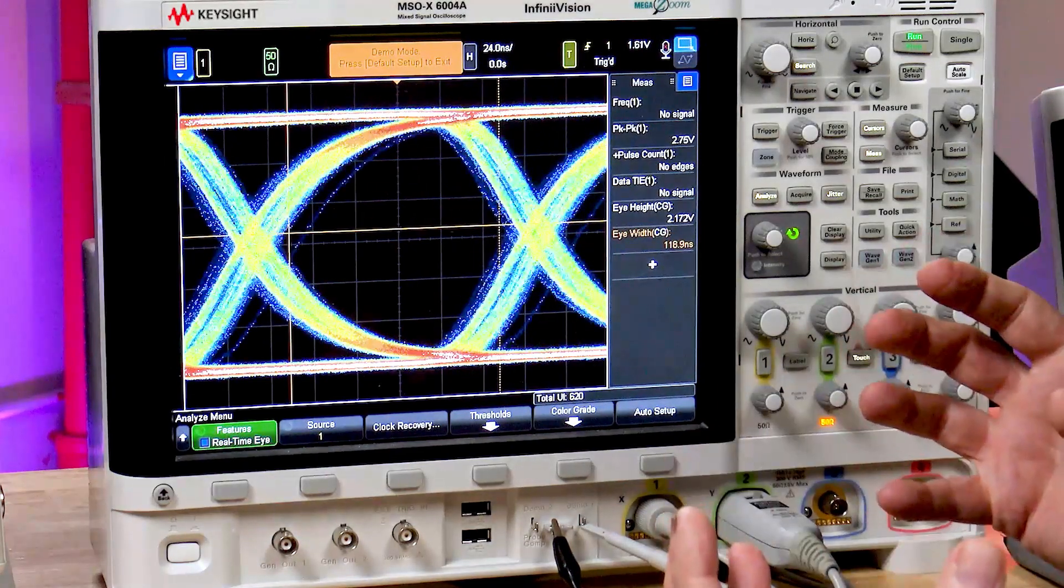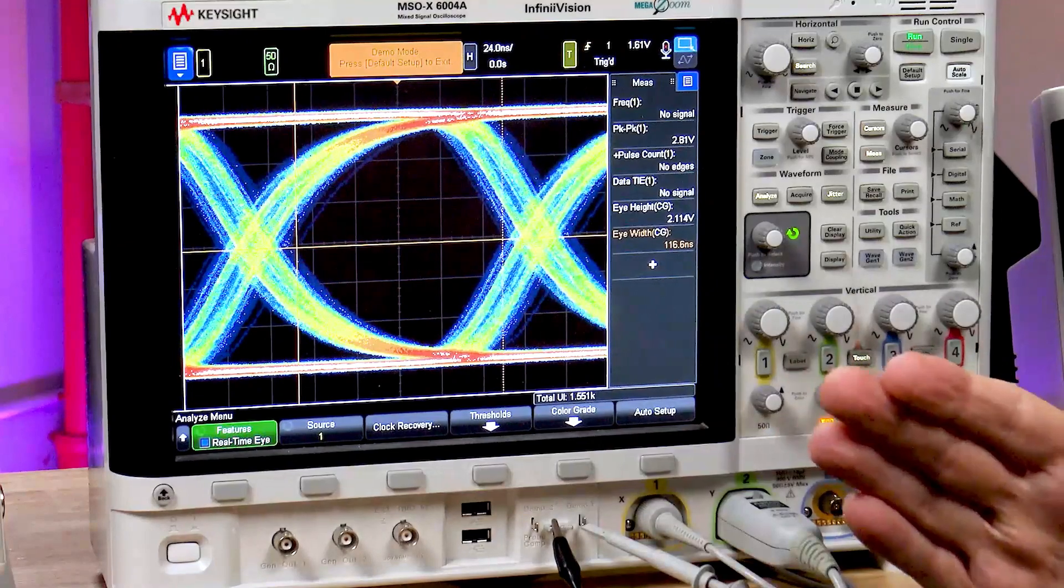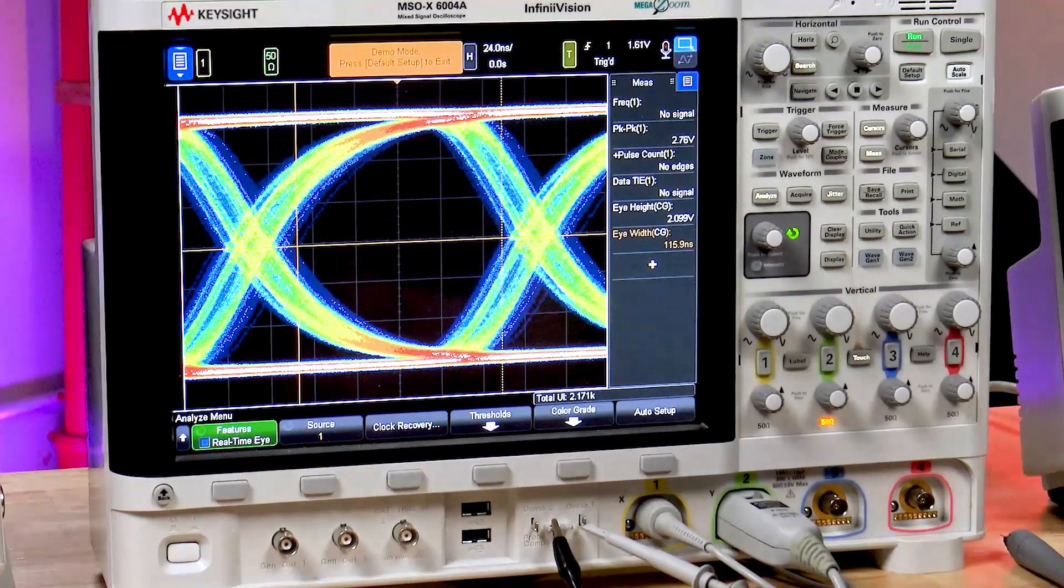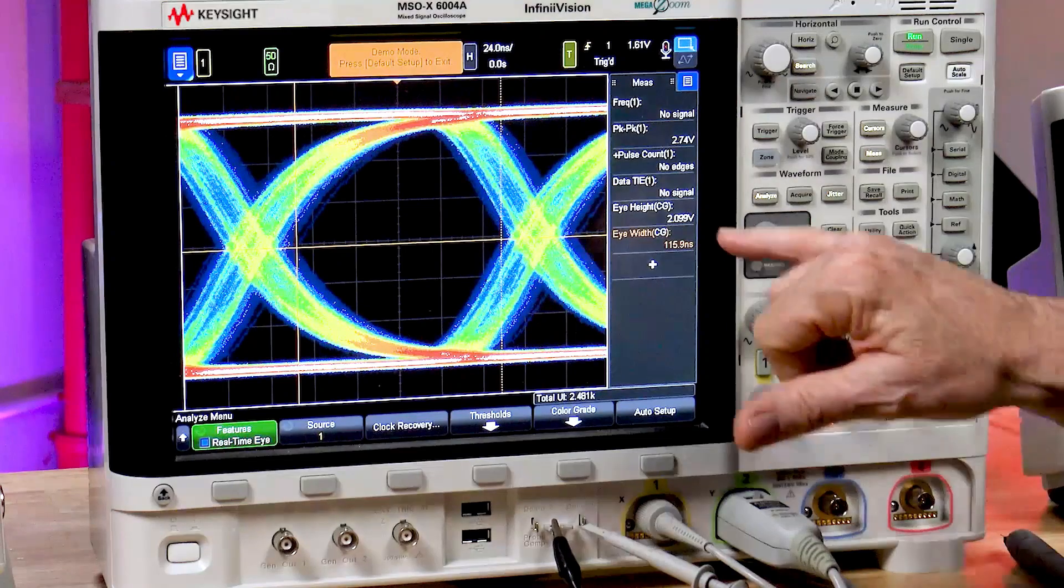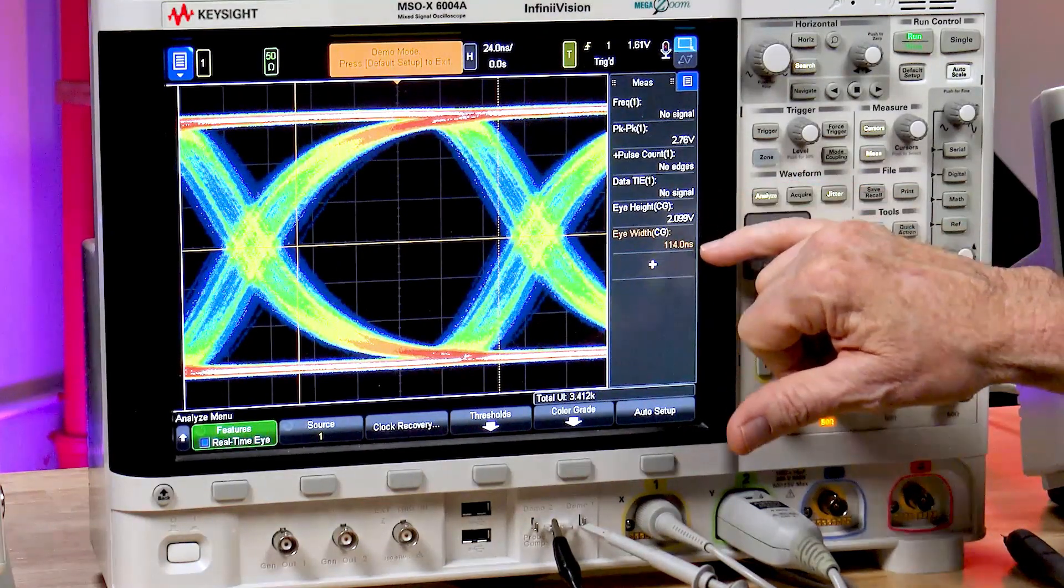And there is our eye diagram. You can see the jitter right away in the eye diagram relative to the recovered clock. And it also automatically measures eye height and eye width.